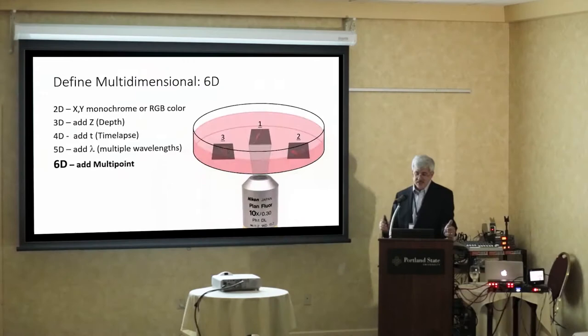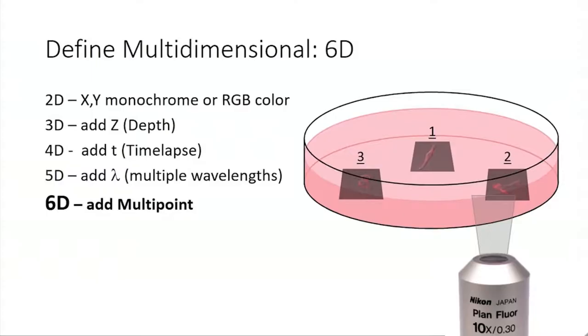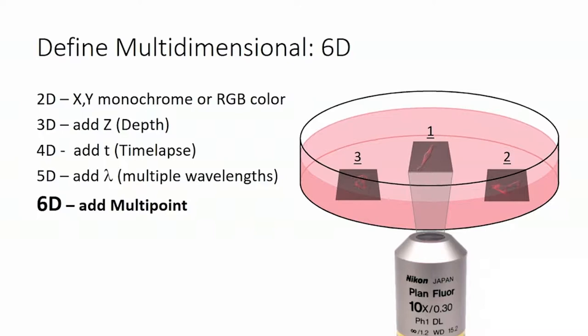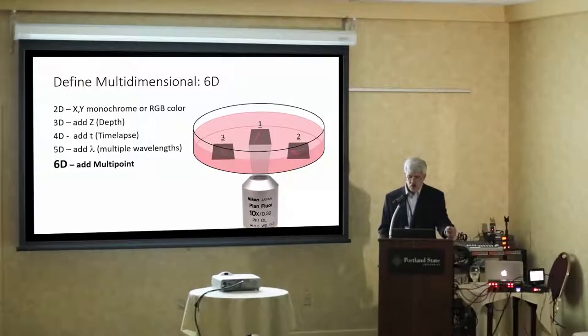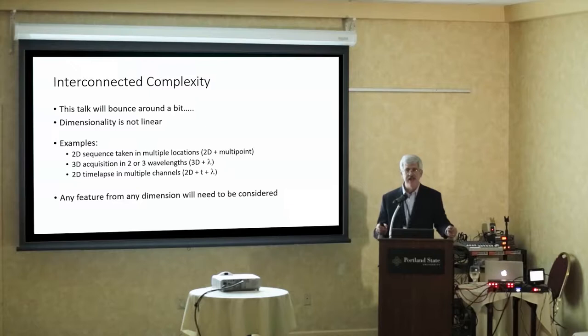What's 6D? 6D is fairly straightforward — it's just doing the same thing over and over in different places. Essentially you have a time lapse set up at one position, moving to another, doing the same stack there, going to another place, doing the stack there, coming back to the first one for the second time point, and doing that all over again. So 6D imaging includes all of those things, all interacting and very interconnected — that's where the complexity comes in.